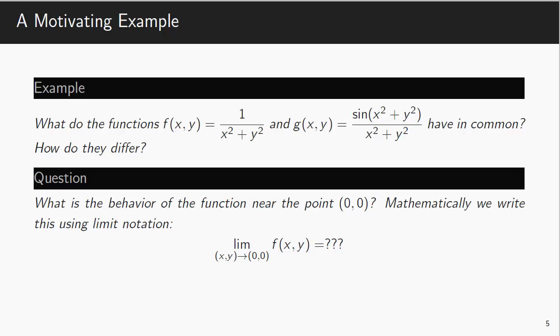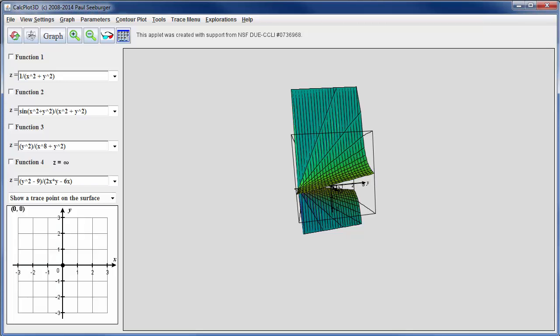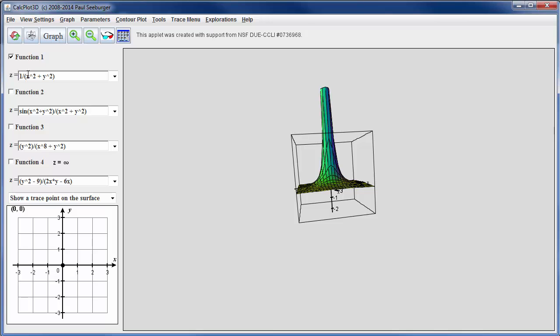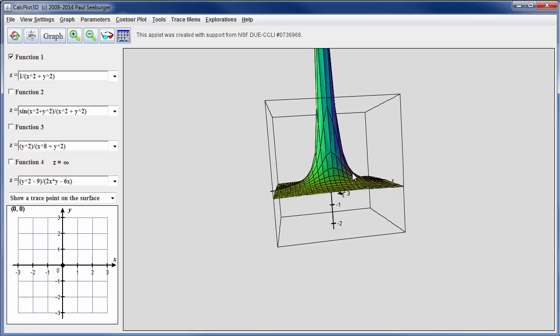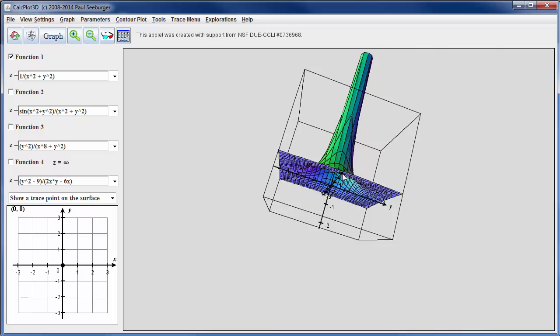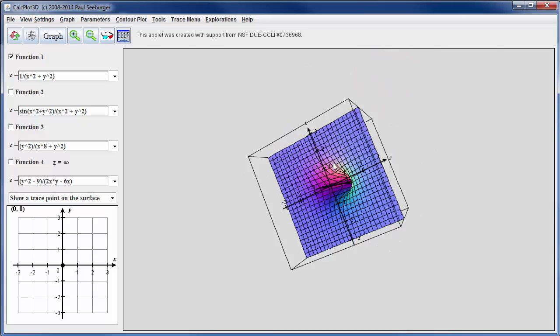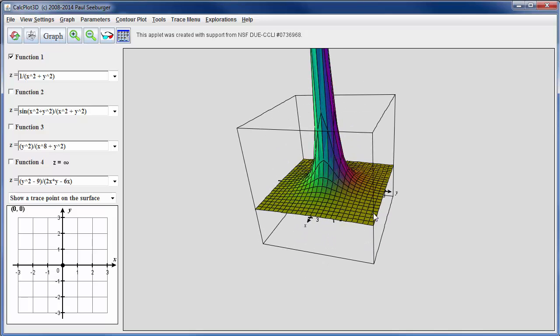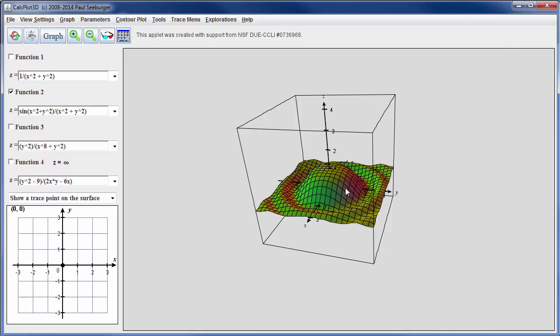So one way we can explore limits is to use a graphical program. So here is the function 1 over x squared plus y squared. And you'll see it's kind of a nice looking function. But at (0,0) it seems like we've got a problem. It's blowing up. So as x and y approach (0,0), the values of the function increase without bound. We might say go to infinity.